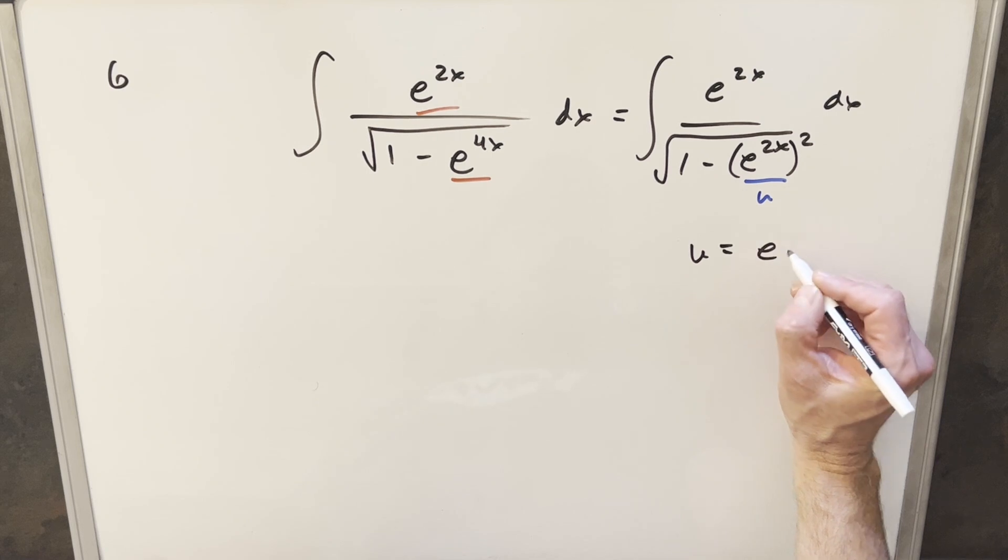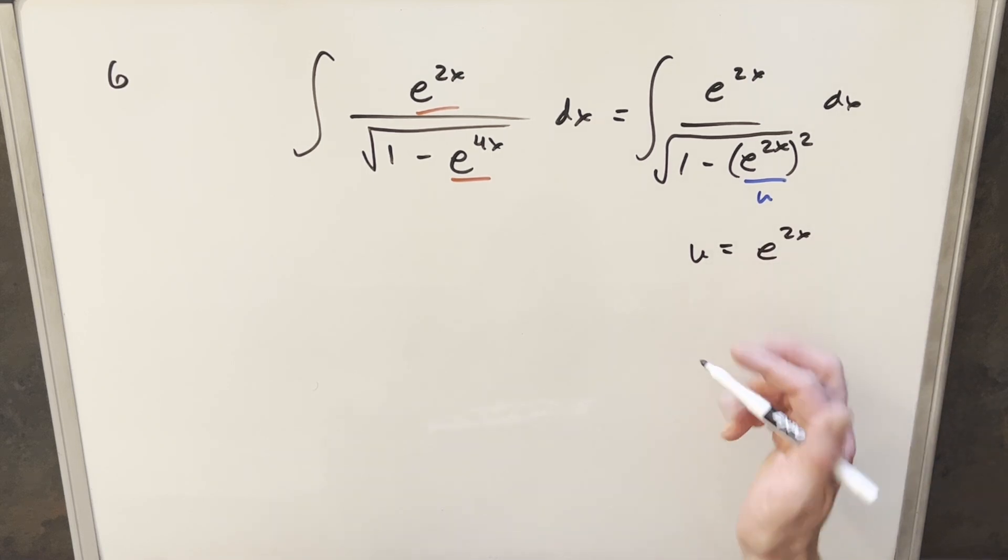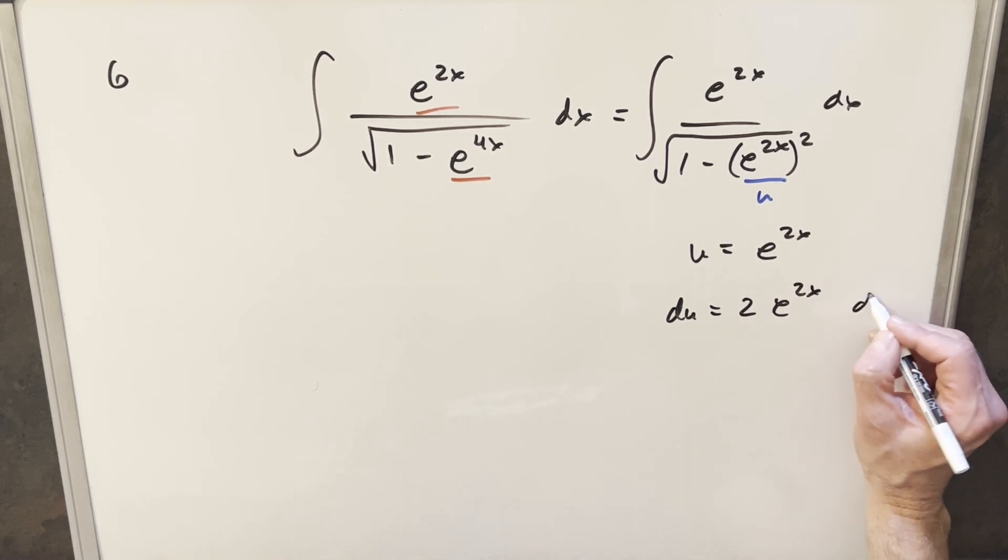I'm going to try my u as e to the 2x. Then we'll take our derivative. So then for our du value, we're going to have e to the 2x. But we're going to have a 2 in front, dx.